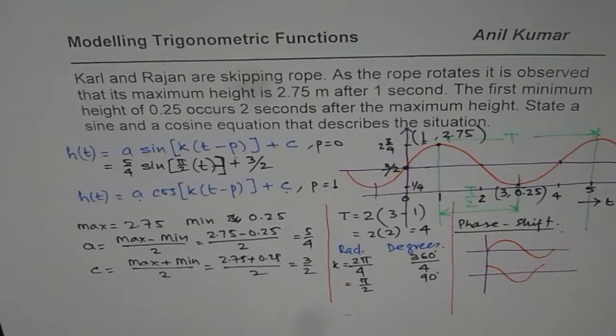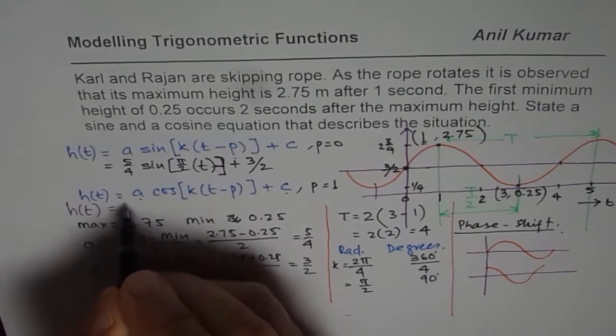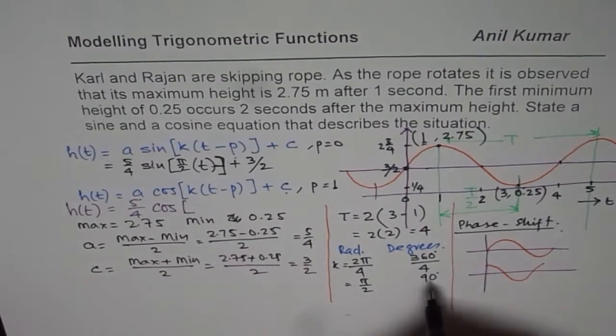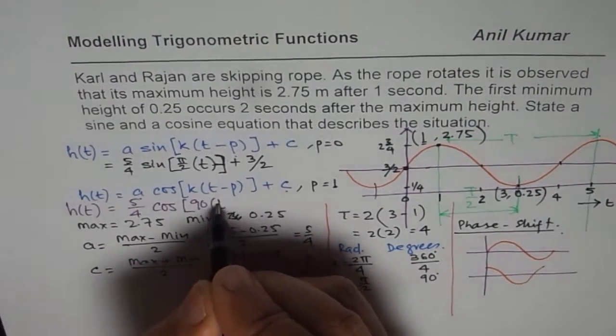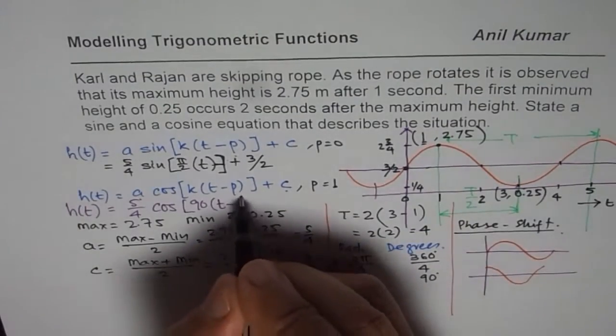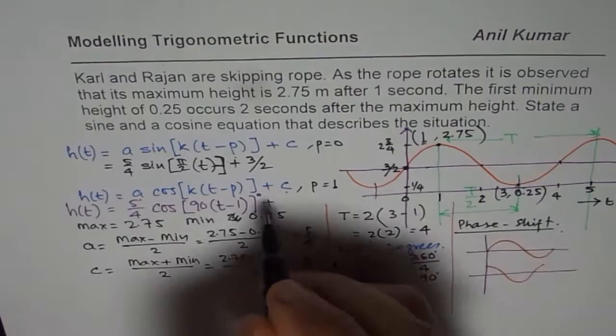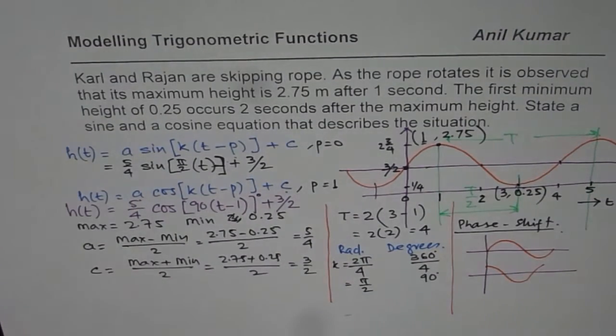Now let me write down the cosine function, which is h(t) equals 5 over 4 cos of, we can write this in degrees, 90 degrees times t minus phase shift of 1. This is in degrees, plus C value of 3 by 2. So either in degrees or in radians, you can write down your equation as described.